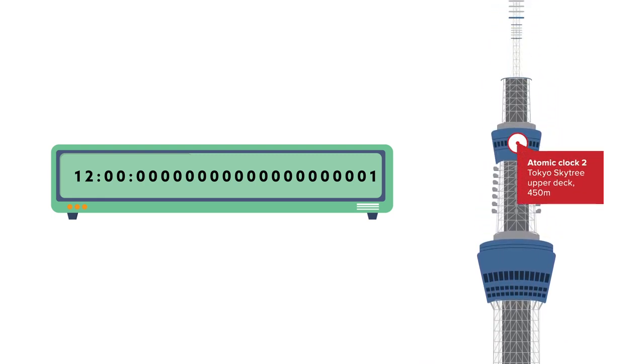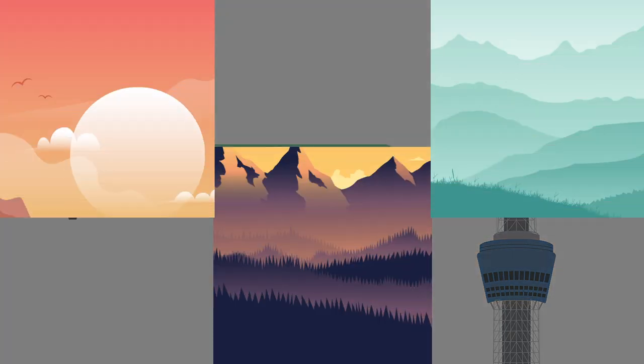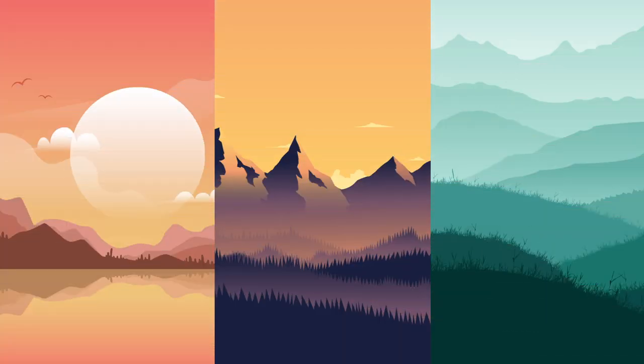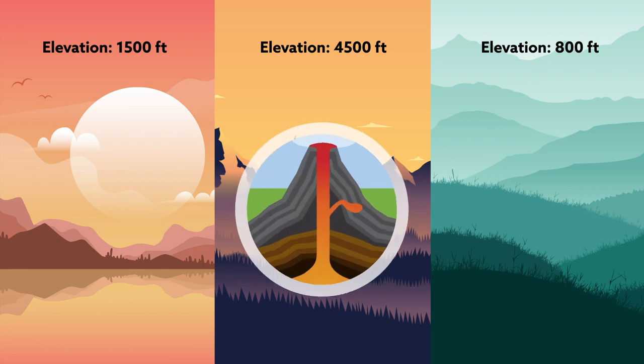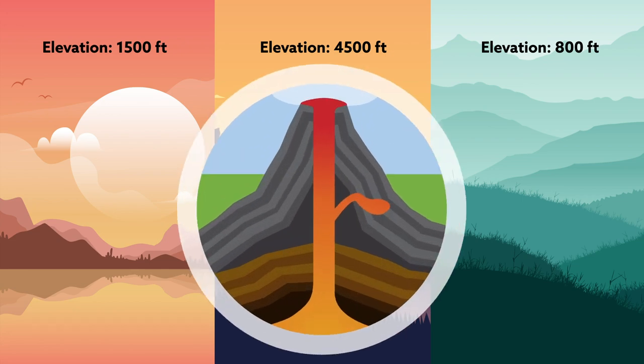But the true innovation is the clock's portability. Small and easy to transport, the clocks could be used to detect otherwise invisible differences in height. That includes foreboding differences in ground swelling in risky areas such as active volcanoes or regions of crustal deformation.